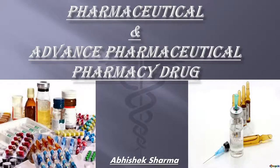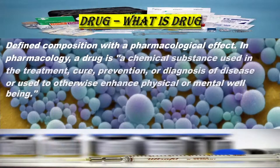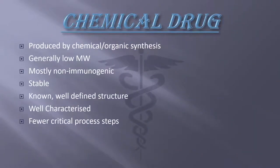Hello my dear friends. In our series on pharmaceutical and advanced pharmaceutical topics, we have studied what a drug is, and then biological drugs. Now we will learn about chemical drugs. Chemical drugs are understood to be organic or chemical synthesis products.